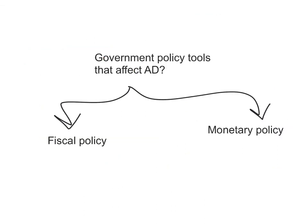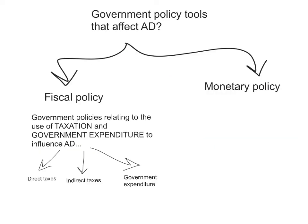There are some government policy tools that affect aggregate demand. The first is fiscal policy, the second is monetary policy. Fiscal policy refers to government policies relating to the use of taxation and government expenditure to influence aggregate demand.